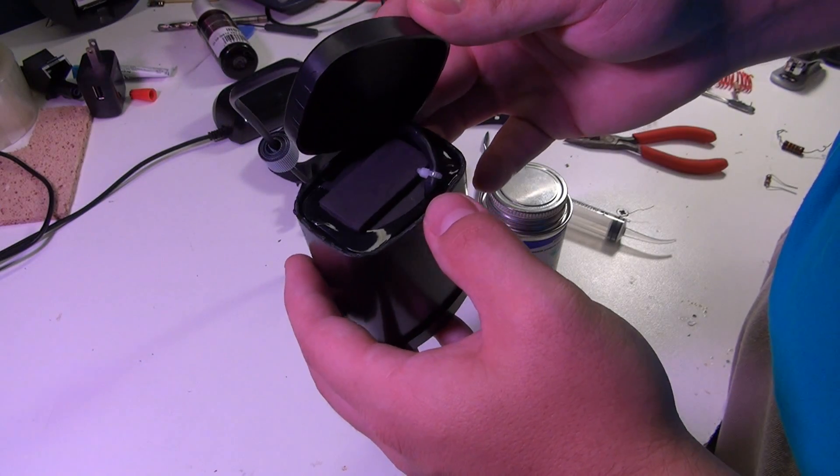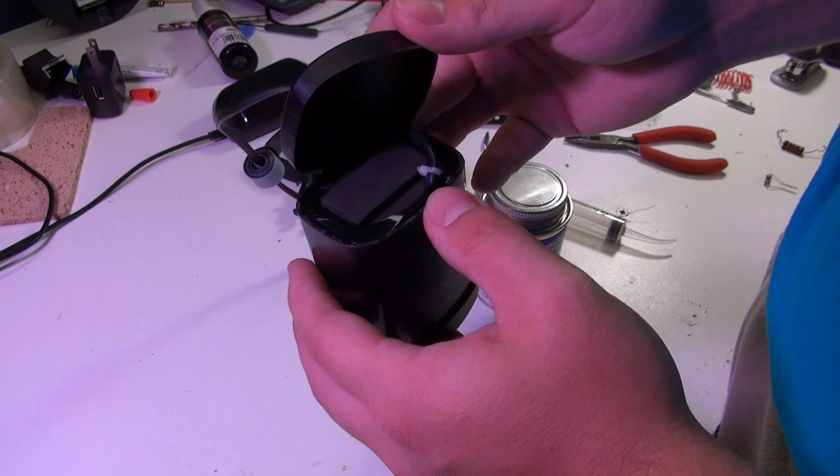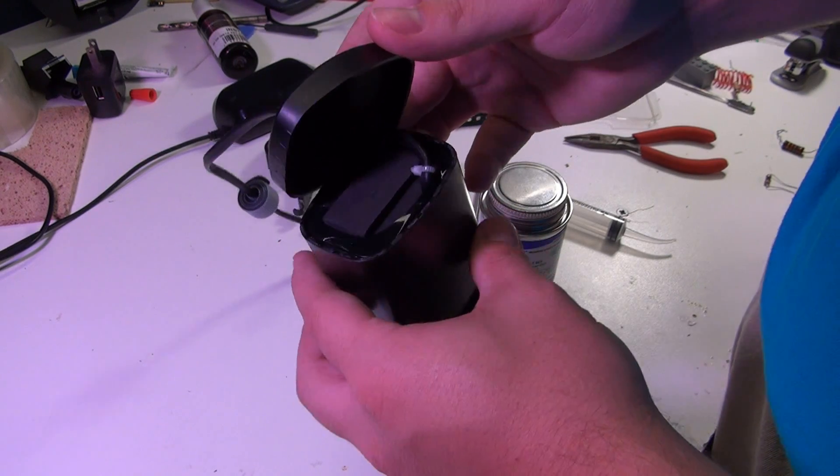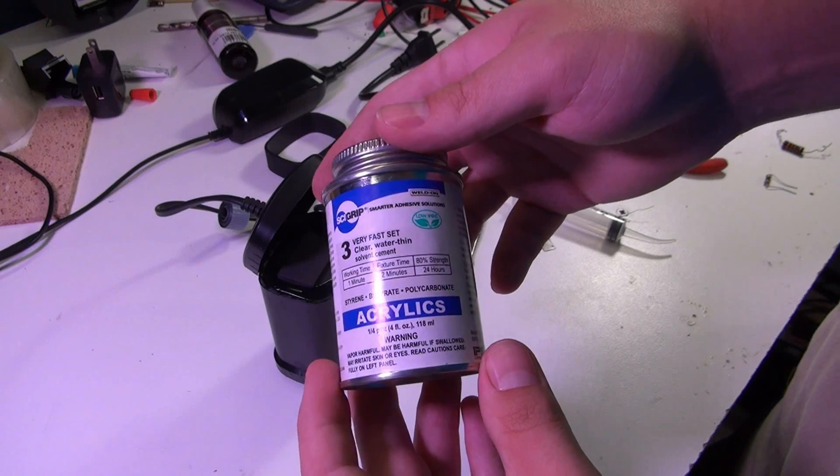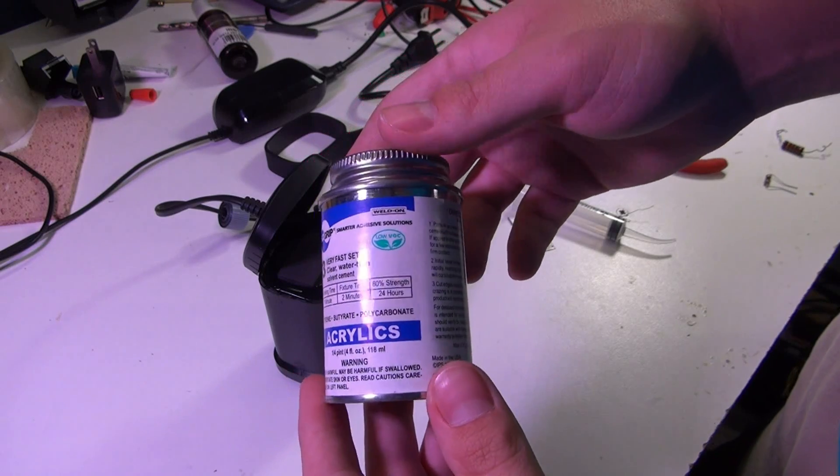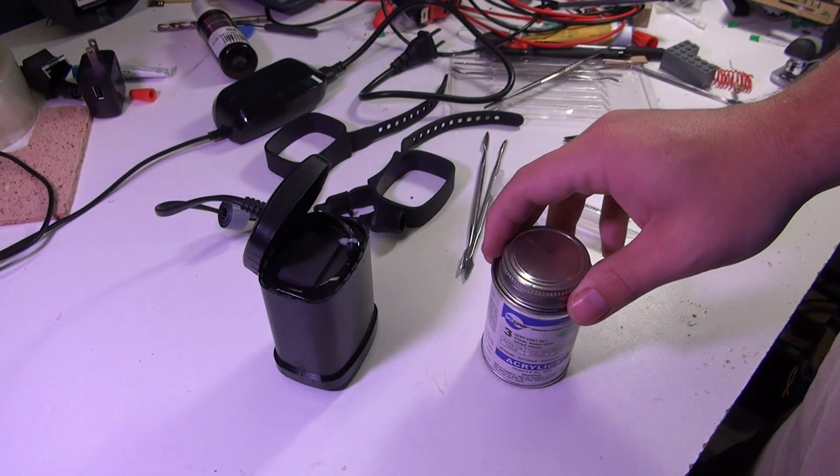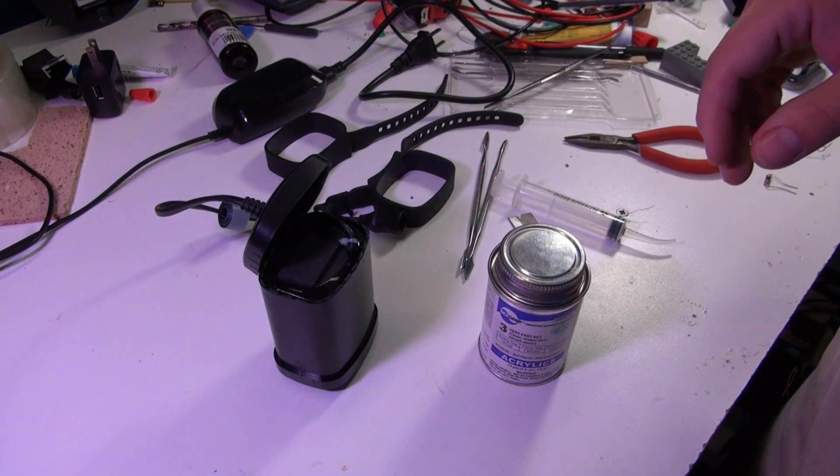How they sealed this to me was probably with a chemical ABS plastic weld, which is what I'm going to use to try to reseal it from weld on. So we'll draw some of this up in the syringe and see what we can do.